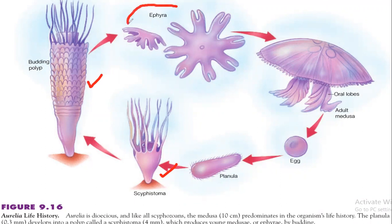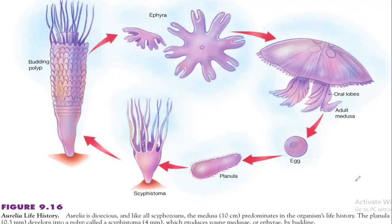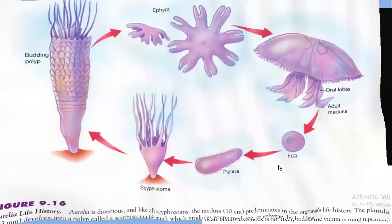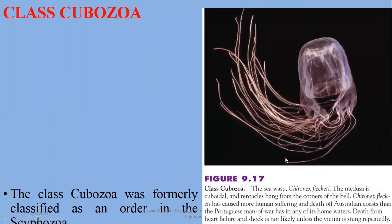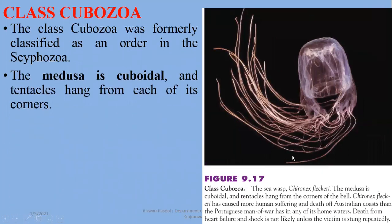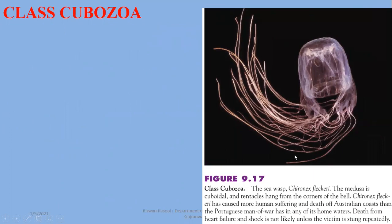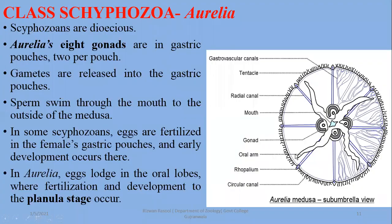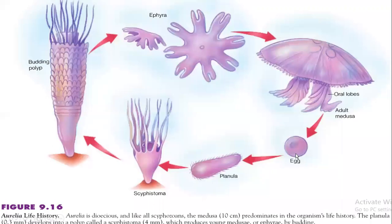After the planula stage, the scyphozoan forms a budding polyp. The early buds from the polyp are termed ephyrae. Ephyrae develop into adult jellyfishes — adult medusa forms. The medusa then undergoes further sexual reproduction, producing the next planula larva, which ultimately develops into the polyp form. The polyp form in scyphozoans is reduced.